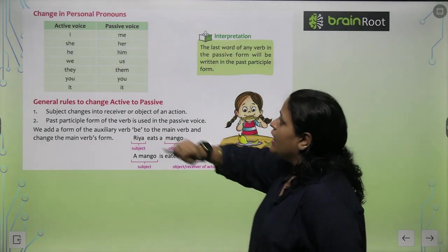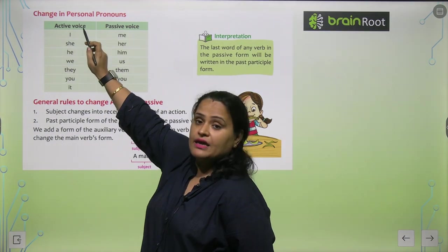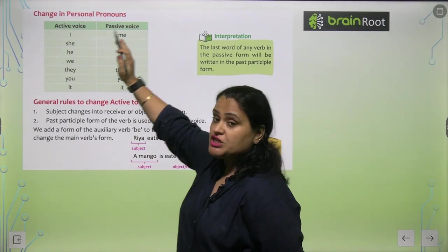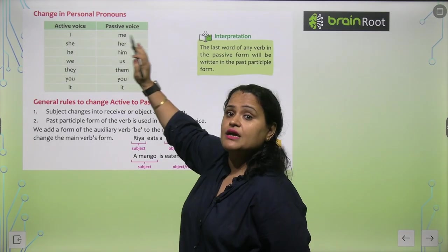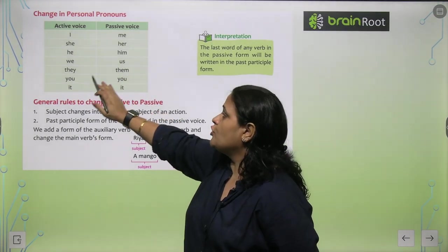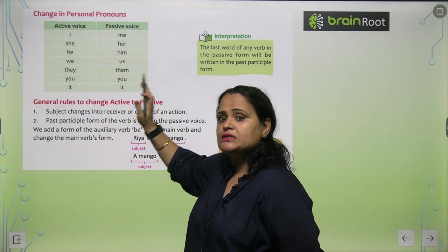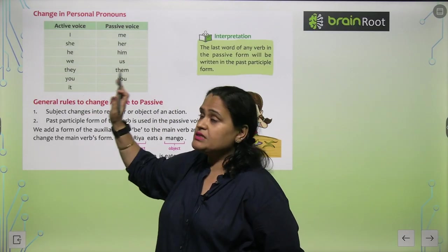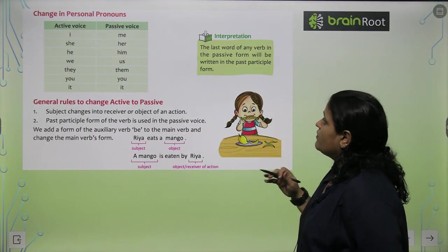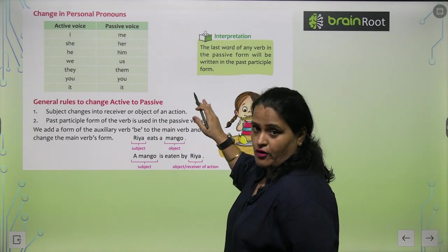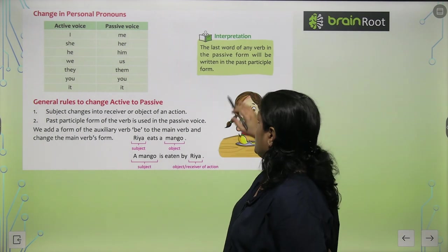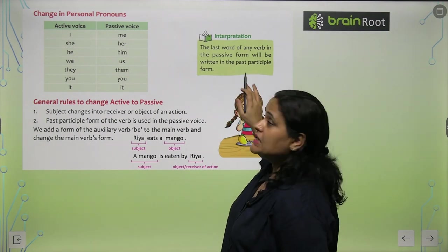In Passive Voice, pronouns change: I becomes me, she becomes her, he becomes him, we becomes us, they becomes them, you remains you, it remains it. The last word of any verb in the passive form will be written in the Past Participle form. So aapko yaad rakhna hai ki jab bhi aap passive sentence banayenge, form will be Past Participle.